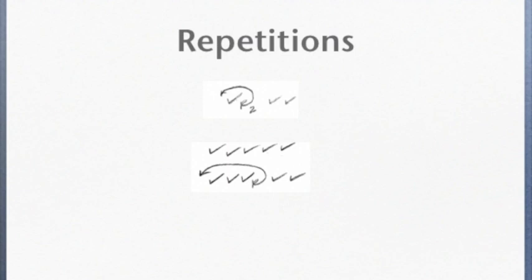Repetitions look like this in a running record. The first one, the word was repeated twice. In the second one, a phrase was repeated. You'll notice an R is drawn with an arrow going all the way back to the word where they started the repeat.